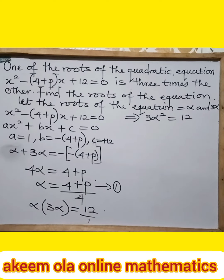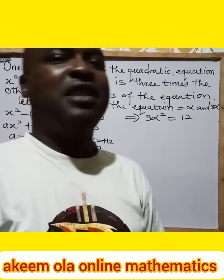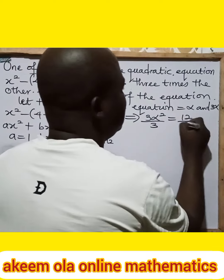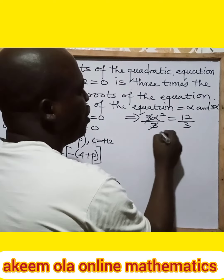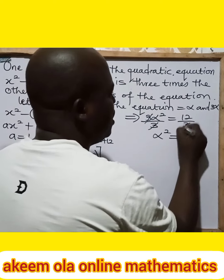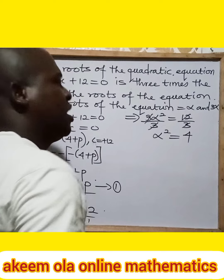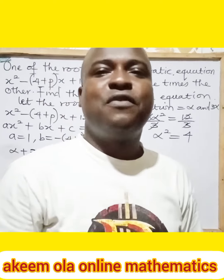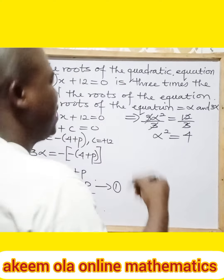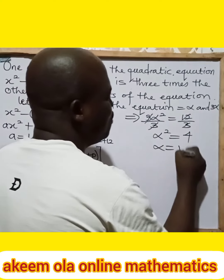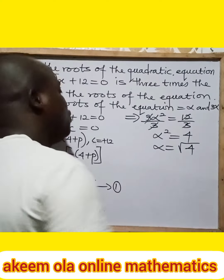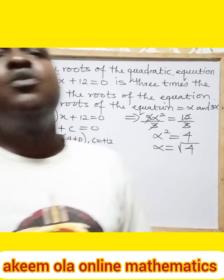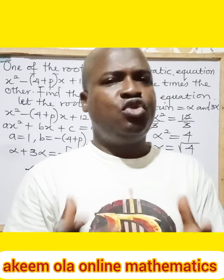I can divide both sides by 3. Dividing both sides by three, the 3 will cancel. So my alpha squared will now be equal to 4, and I can find the value of alpha directly. My alpha will now be the square root of 4, and the square root of 4 is a perfect square, so it will automatically give us 2.